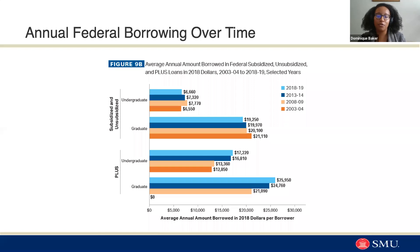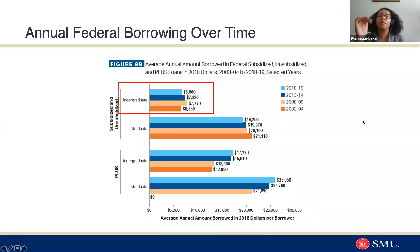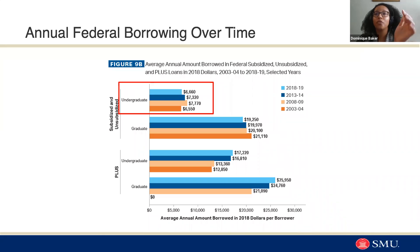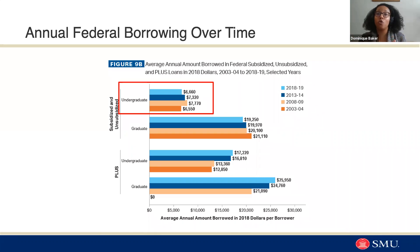I wanted us to think broadly about what federal borrowing has looked like over time. The first part is what we're often thinking about when we talk about student aid: loans that go directly to students that are either subsidized or unsubsidized — whether or not they're accruing interest while the student is enrolled. What you can see is that generally speaking, the average annual borrowing per borrower for these direct loans going to students has not shifted all that much.